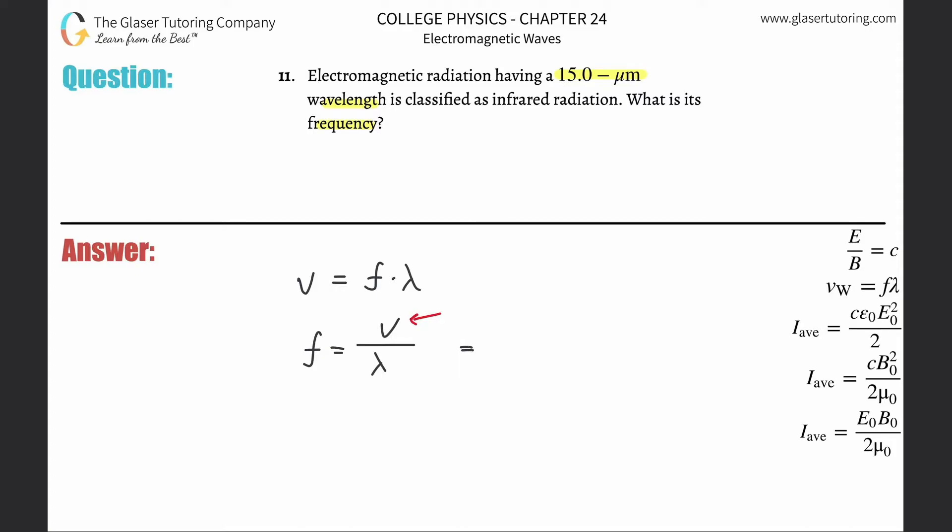So calculating then, this is 3 times 10 to the 8 divided by the wavelength, which is 15 times 10 to the minus 6, because we need that in meters, not micrometers. So this is simply going to be 3 times 10 to the 8 divided by 15 times 10 to the minus 6.